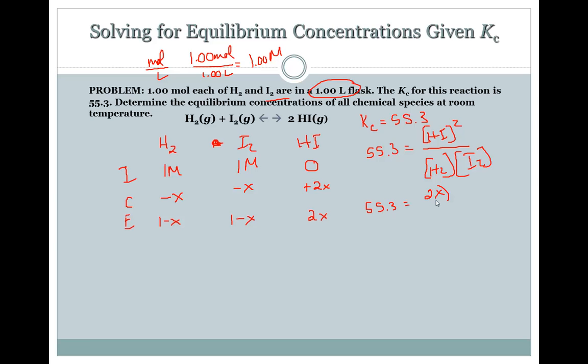That is X equals 0.788. So that means that H2 is 1 minus 0.788, which is then 0.212. Same with the I2. And then 2 times 0.788 is going to be HI, and that is 1.58.